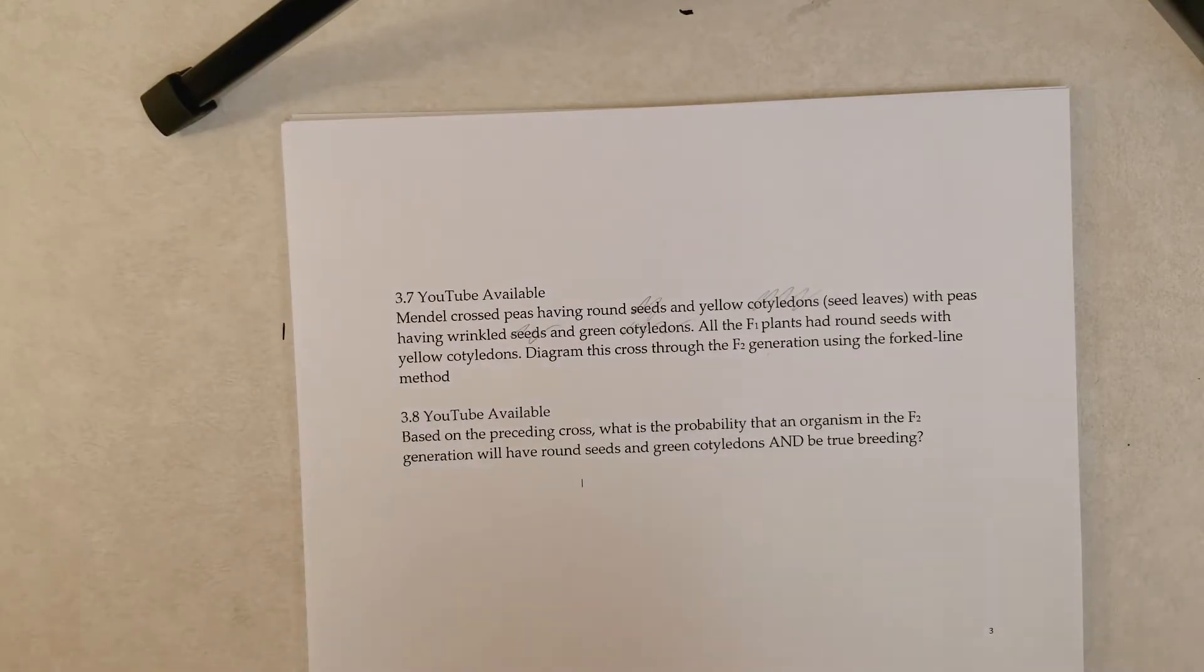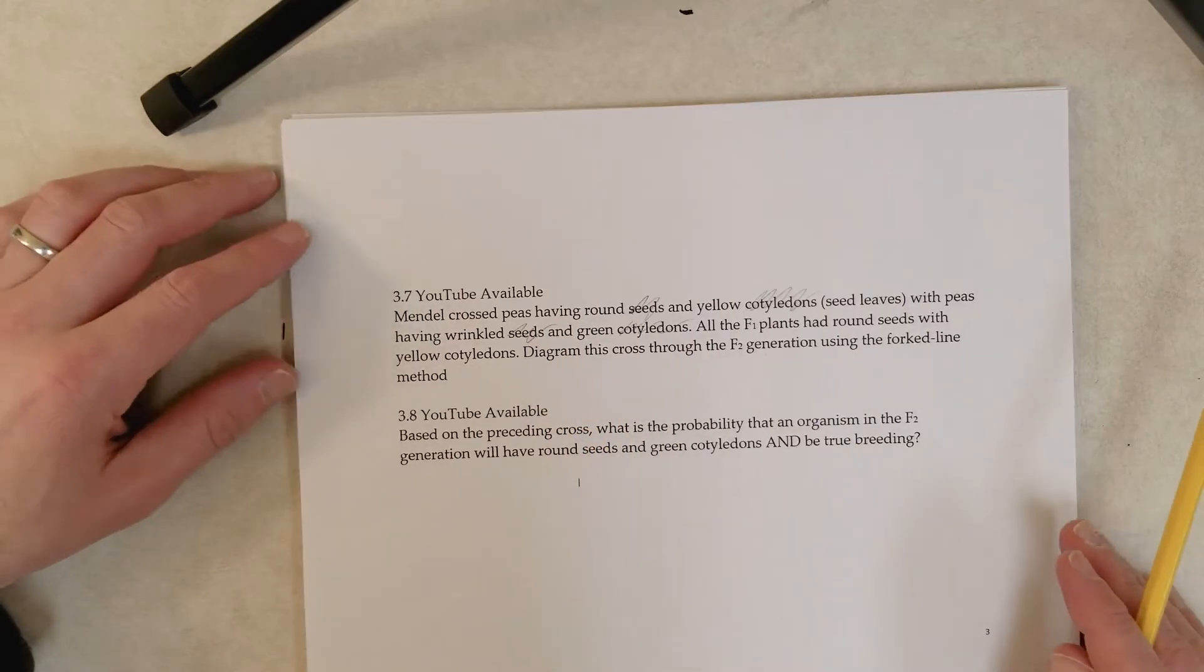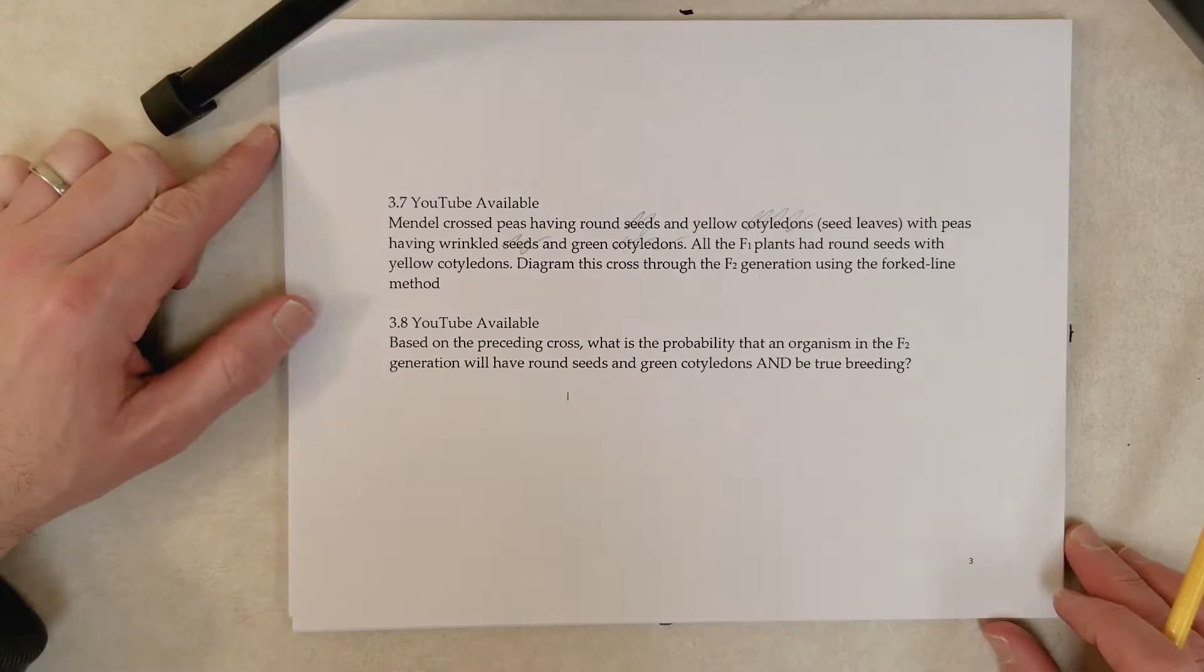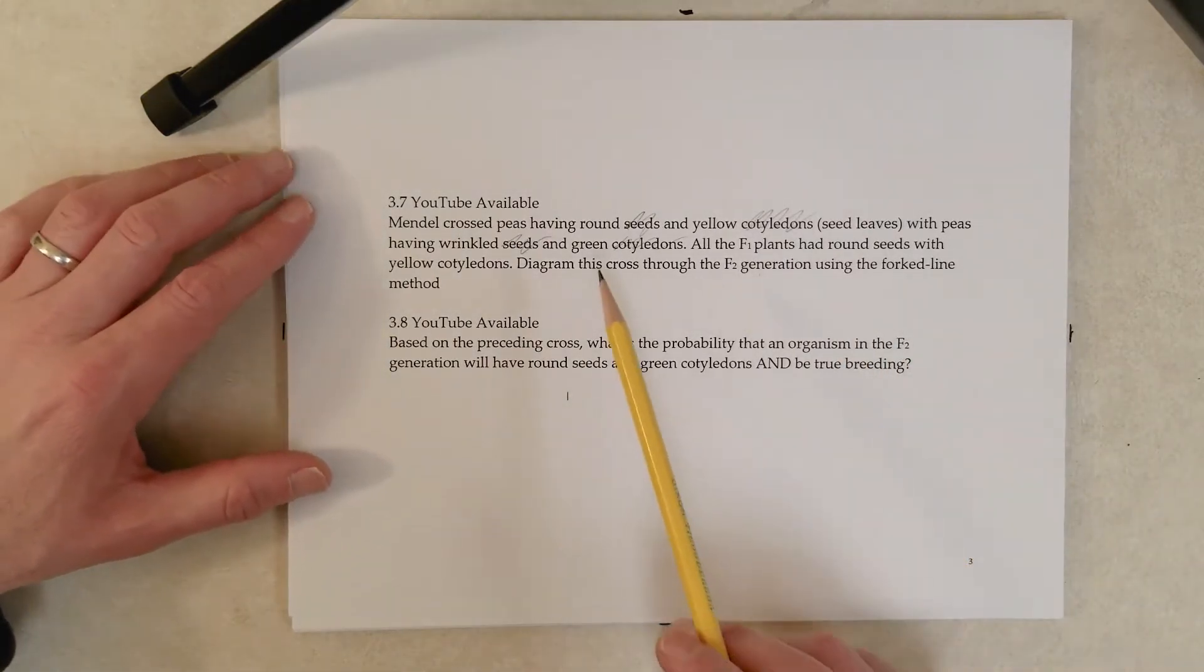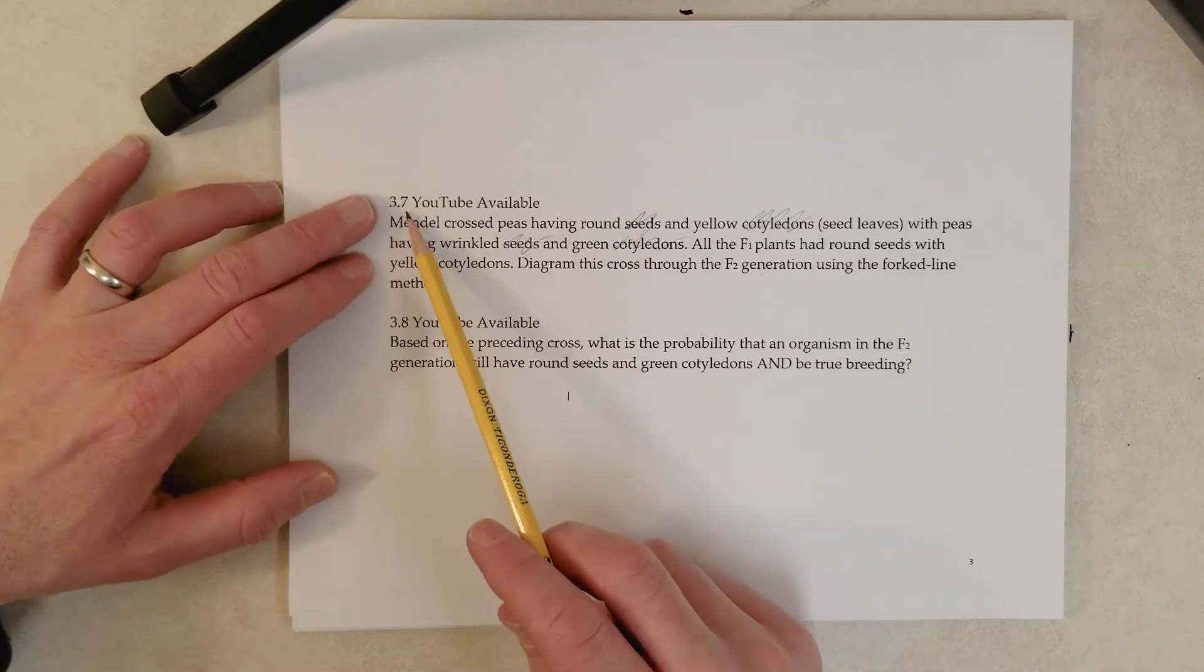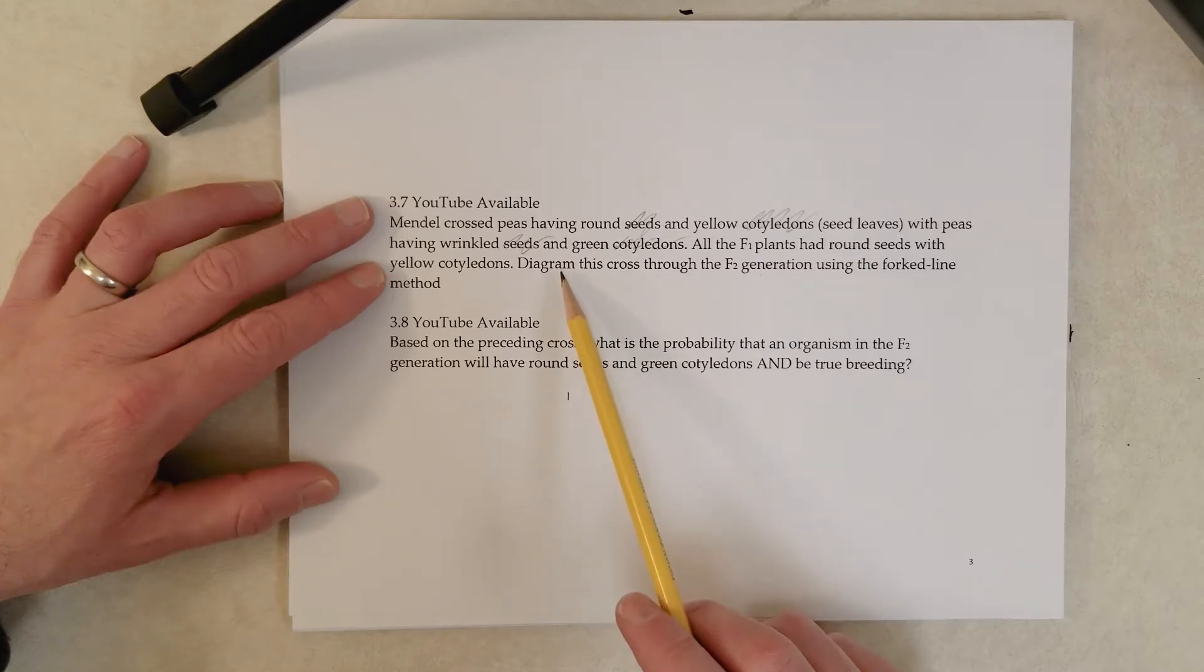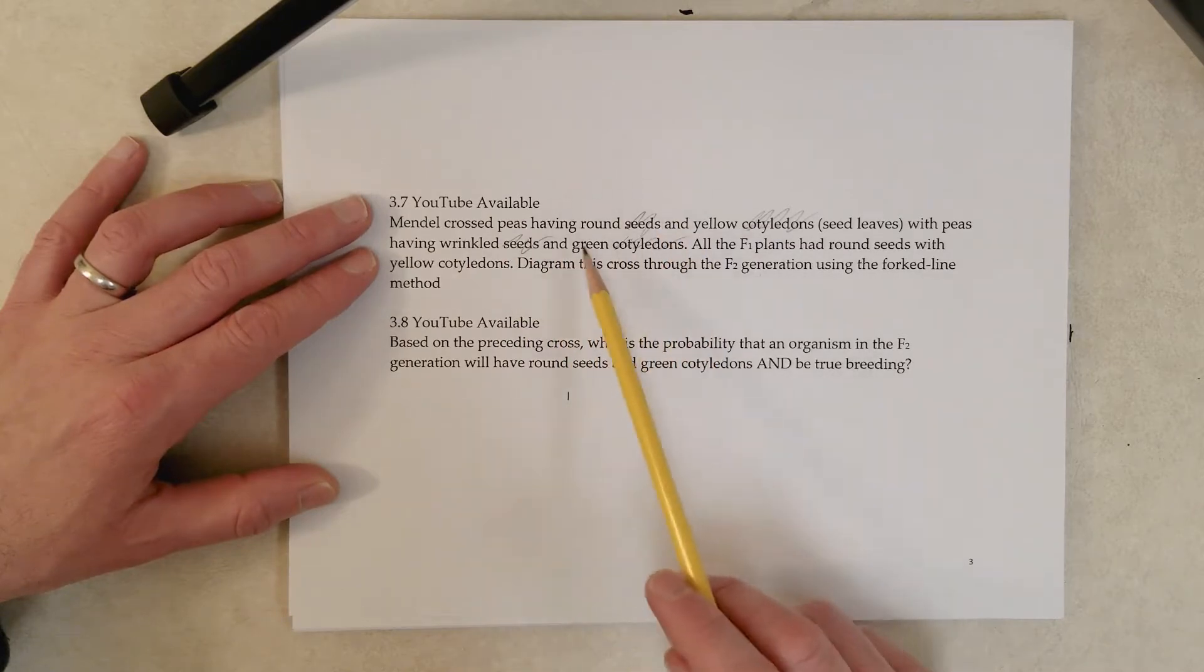Okay, so this is a question that we went over in class today. I just want to go over it in the video here in case you couldn't make it to class or you need a refresher. Problem 3.7 essentially is asking us to diagram Mendel's dihybrid cross involving round and yellow peas to peas that are wrinkled and green. So these are homozygous true breeding plants.